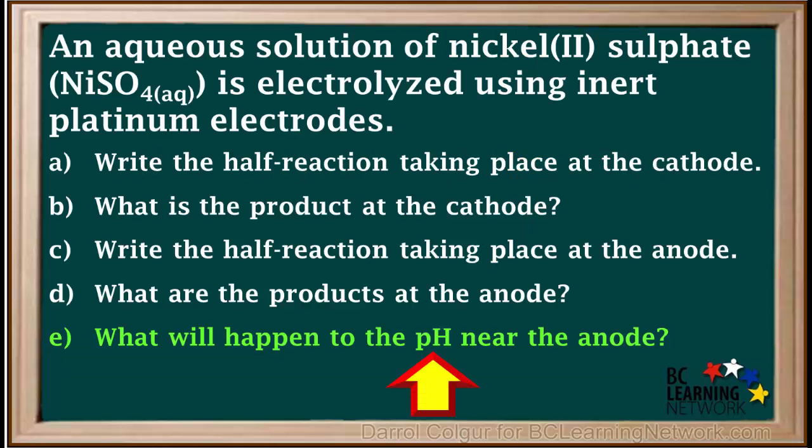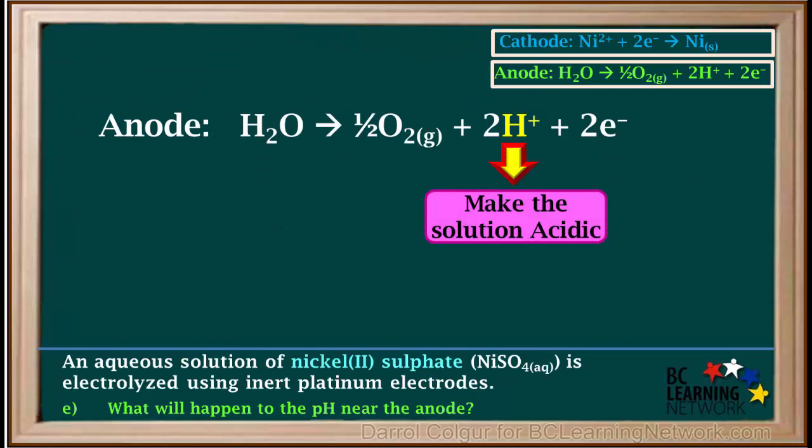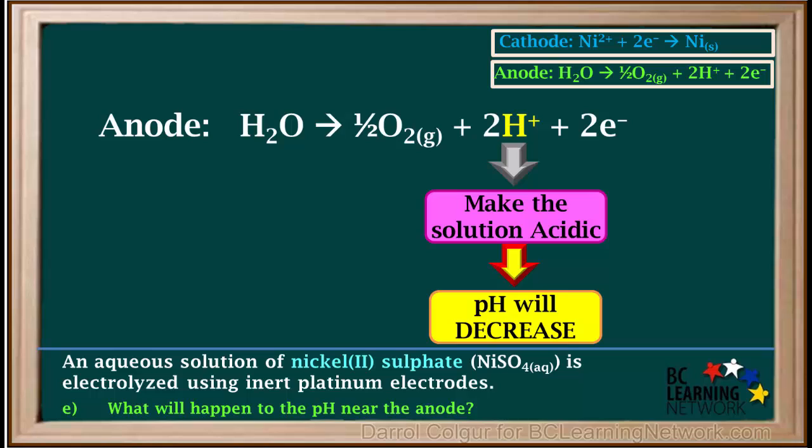Question E asks what will happen to the pH near the anode. The H+ ions that are formed will make the solution around the anode acidic. Which means the pH near the anode will decrease. So now we've answered question E. The pH near the anode decreases as the cell operates.